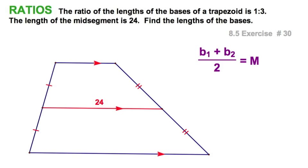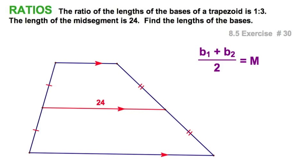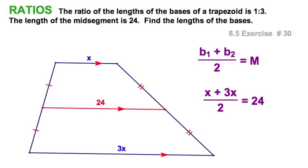Here's a trapezoid with a mid-segment of 24, and the ratio of the bases is 1 to 3. I'm going to assign one base as x, and the other as 3x. Substituting into the formula: (x + 3x) / 2 = 24. x plus 3x is 4x, half of 4x is 2x, so 2x equals 24, meaning x equals 12. By substitution, the bases are 12 and 36 respectively.